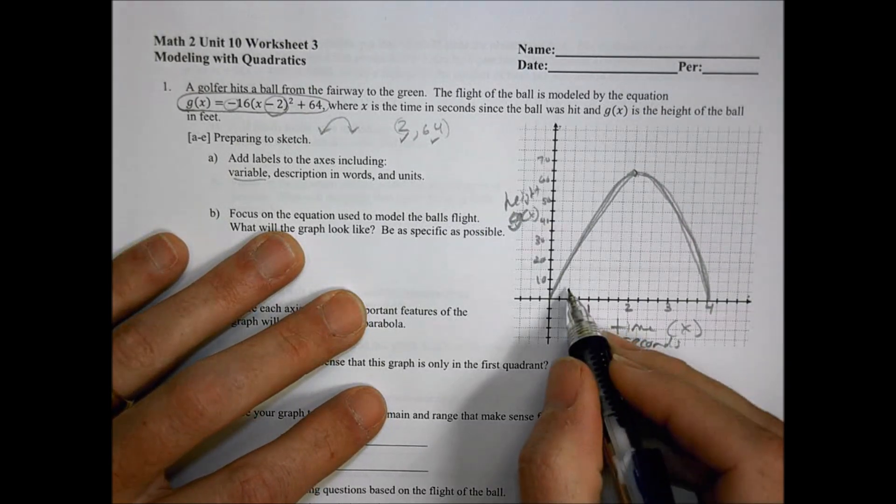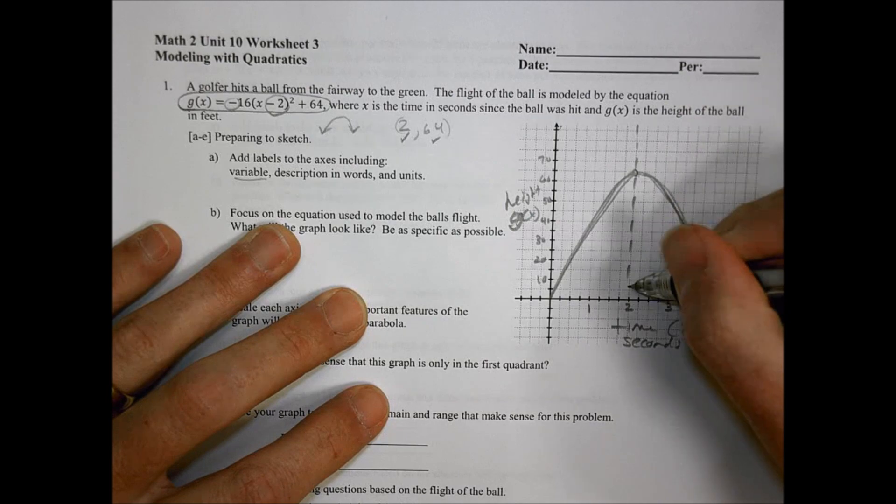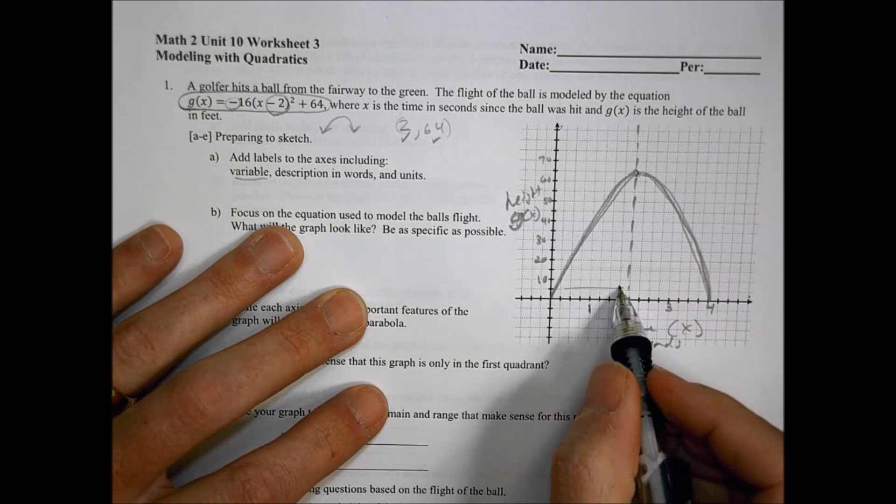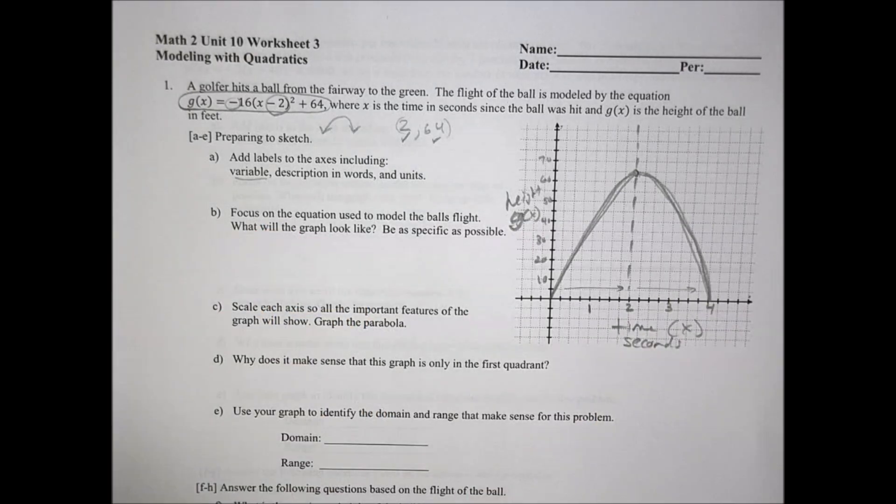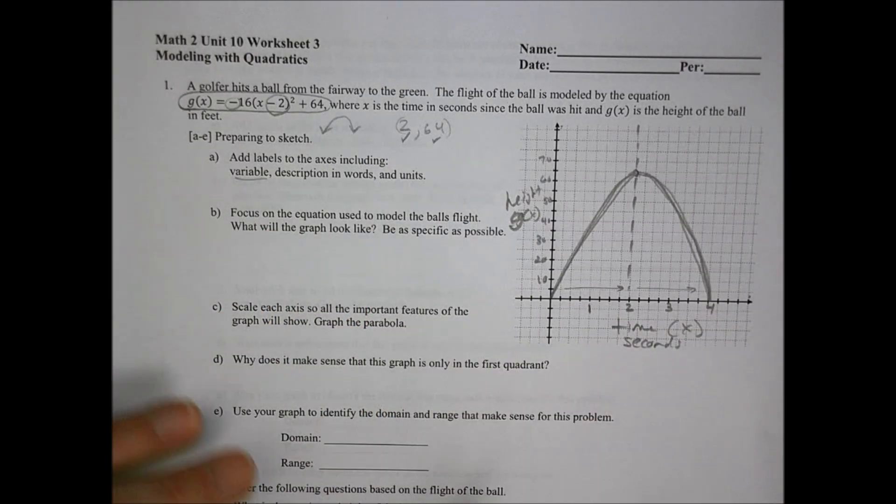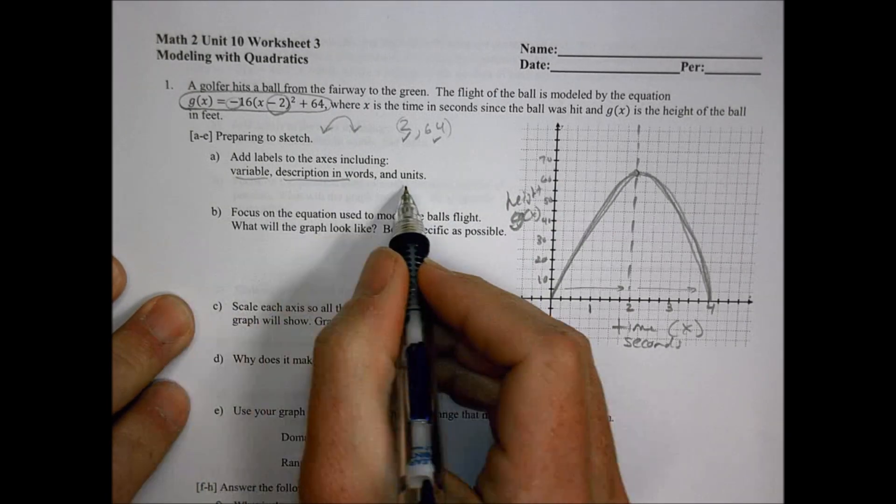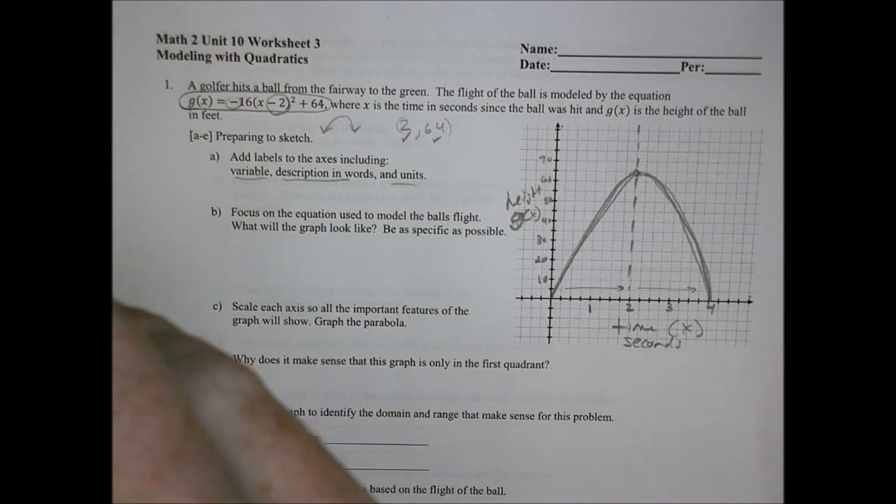If it takes 2 seconds to go up, we're going to assume this is a parabola that's going to curve. We're going to go up and then come right back down. It's going to take the same time to come back here to the 4. Not a perfect sketch there, but you get the idea.